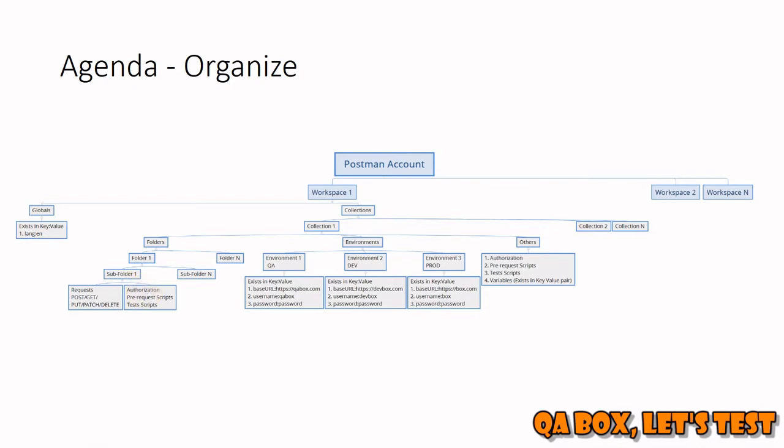The concept for pre-request scripts is pretty much the same — we are lifting up whatever pre-request scripts we write inside a folder. They are executed first before pre-request scripts defined in the request are executed. The same is the case with test scripts: test scripts defined at the folder level are executed first before the tests defined in the request are executed.